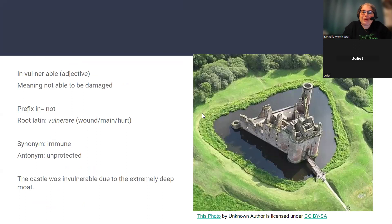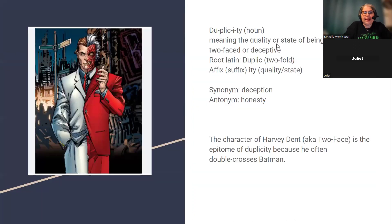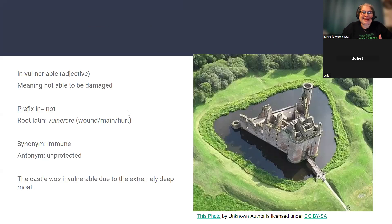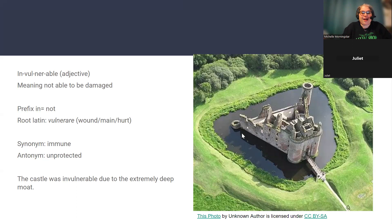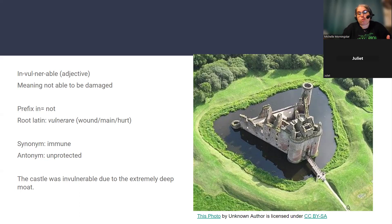The two words for this activity are invulnerable and duplicity. Invulnerable is an adjective, and it means not able to be damaged. When I think about invulnerable in Hamlet, I'm thinking about that castle with the moat where they couldn't get to them — and that's the picture I picked, the castle surrounded by the moat. They're invulnerable unless the people have scuba gear. The prefix is 'in-', meaning not, and the Latin root is 'vulnare,' which means wound, maim, or hurt.